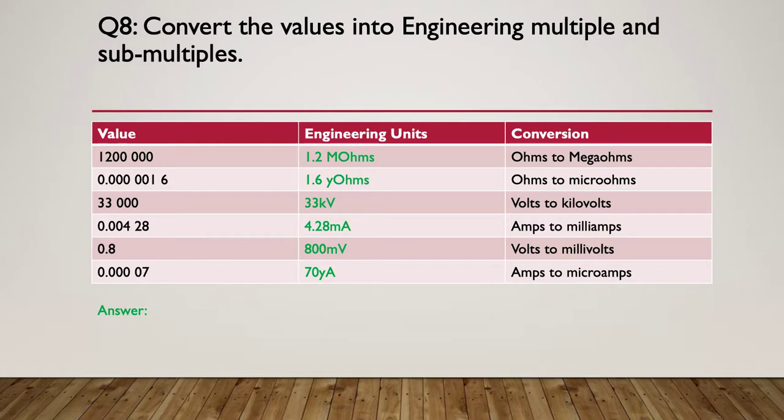And question eight's answer. We've got 1.2 mega-ohms, then 1.6 micro-ohms, 33 kV or kilovolts, then 4.28 milliamps, and 800 millivolts, and then finally 70 micro-amps is the correct answer. So it's just a matter of moving the decimal point with engineering notation to get it into the right value.